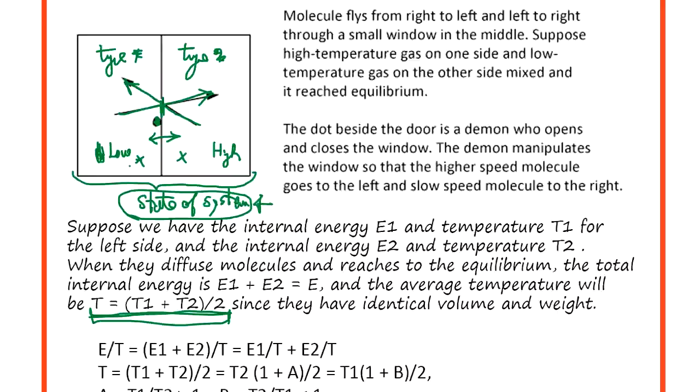If you leave it, it's going to be separated by the demon into high temperature and low temperature. So what's going on here? Just a little demon opening and closing the window, we can decrease entropy. But in nature, we never see the gas itself separated into low temperature and high temperature naturally. There is a state of system to go stationary. The stationary is all mixed up, diffused and mixed up.